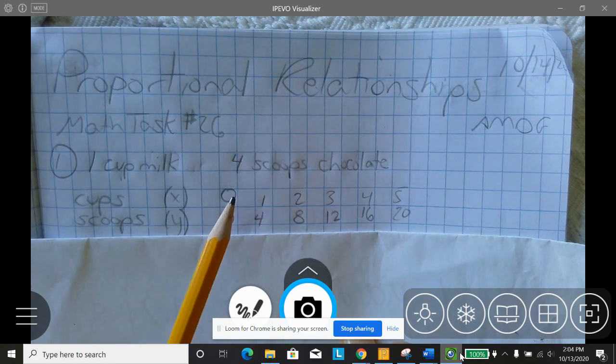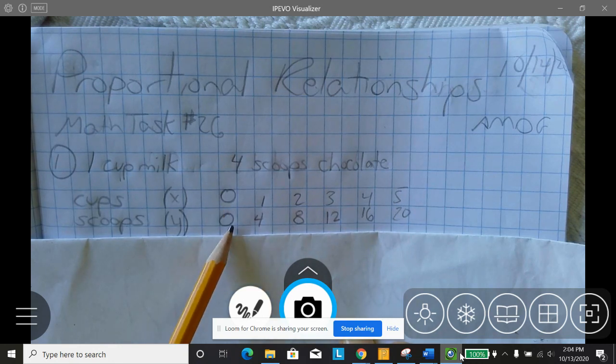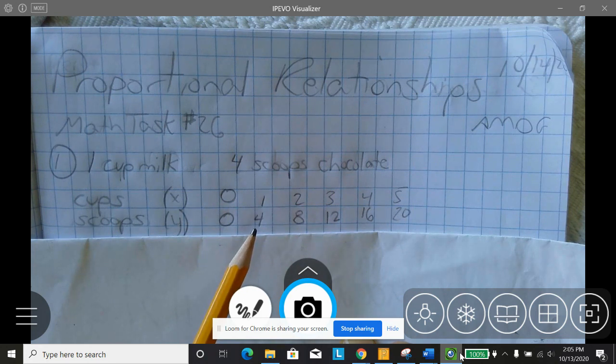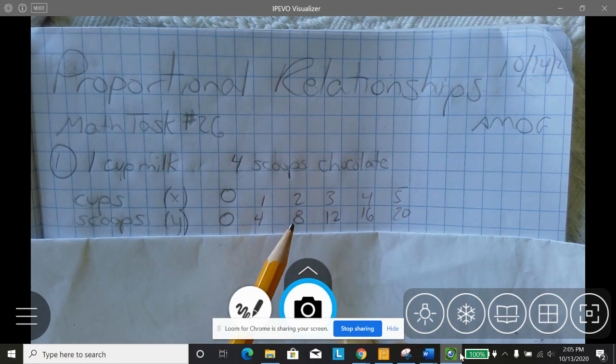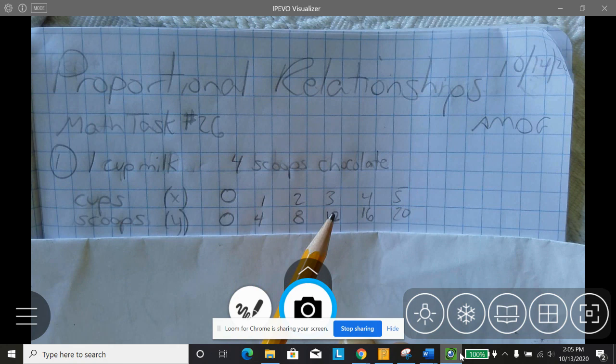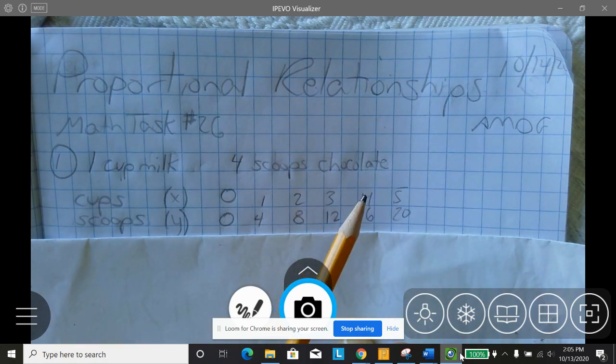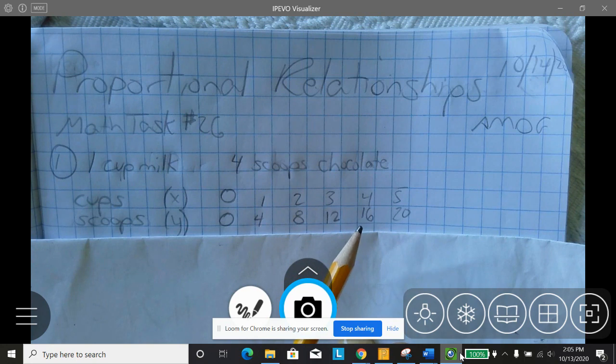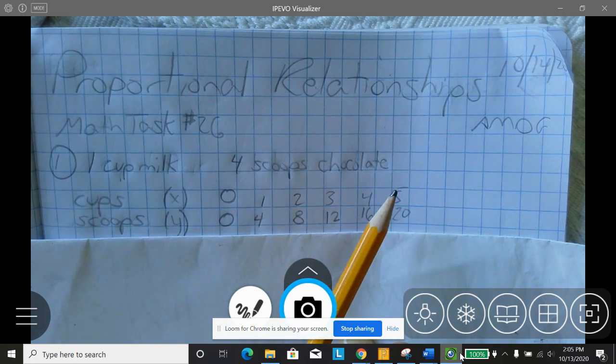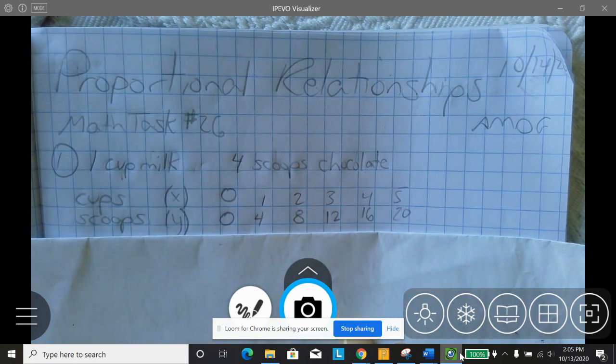So we know that if Nana has 0 cups of milk, she needs 0 scoops of chocolate. She has 1 cup of milk, she needs 4 scoops of chocolate. She has 2 cups of milk, she needs 8 scoops of chocolate. She needs 3 cups of milk, she needs 12 scoops of chocolate. She has 4 cups of milk, she needs 16 scoops of chocolate. She has 5 cups of milk, she needs 20 scoops of chocolate.